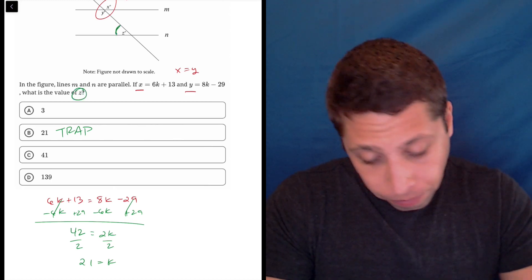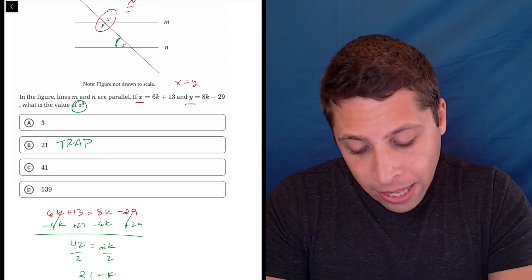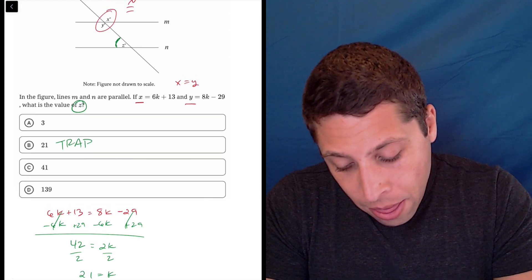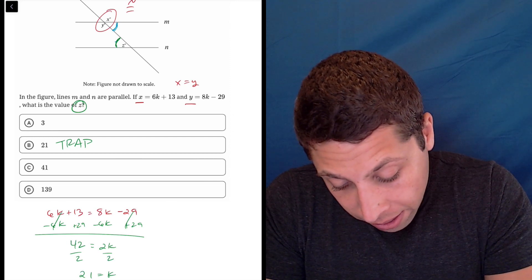So we need to get this angle here, and we can get that because it is, how can I show this? This Z is equivalent to this angle here.